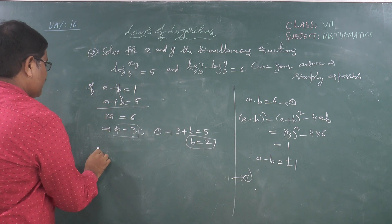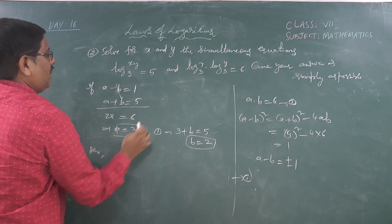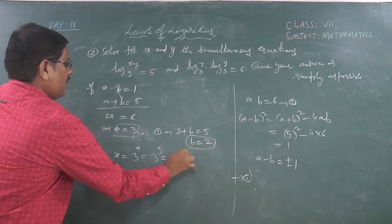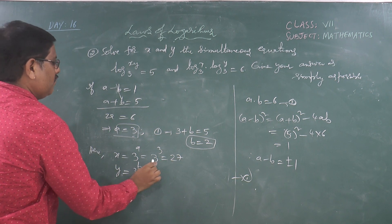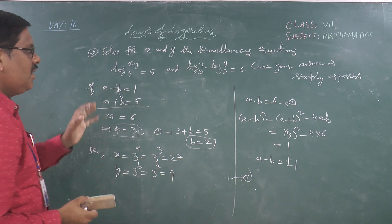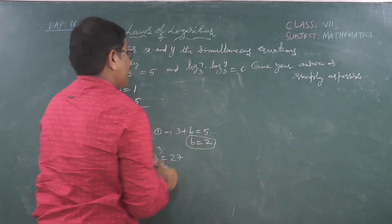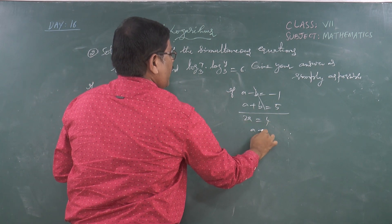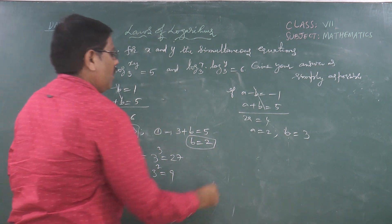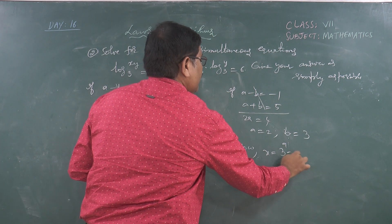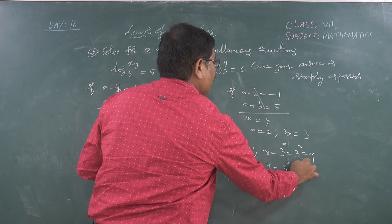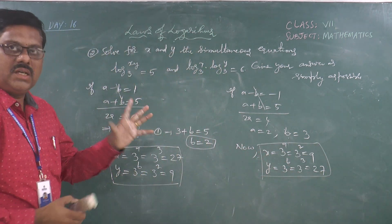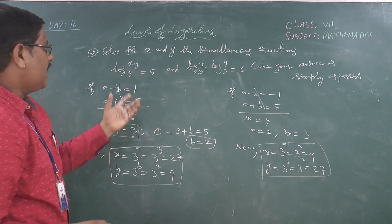With a equals 3 and b equals 2: x equals 3^a equals 3³ equals 27, and y equals 3^b equals 3² equals 9. For the second case, a minus b equals minus 1 and a plus b equals 5: solving gives a equals 2 and b equals 3. So x equals 3² equals 9 and y equals 3³ equals 27. We have two sets of solutions: x equals 27, y equals 9, and x equals 9, y equals 27. Both satisfy the given simultaneous equations.